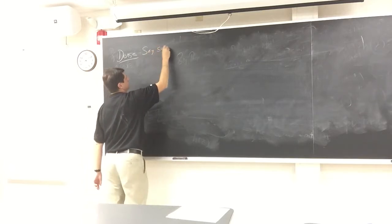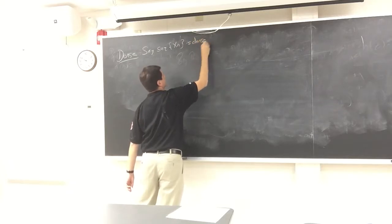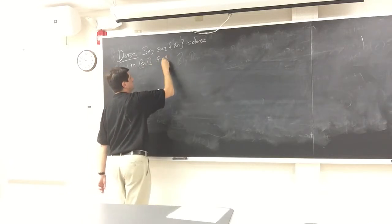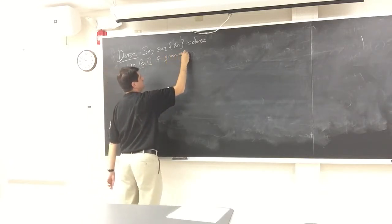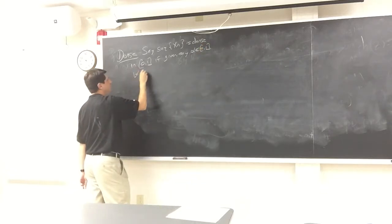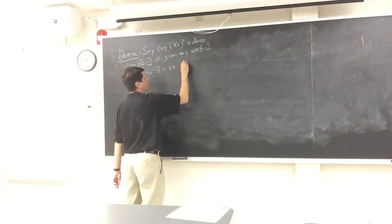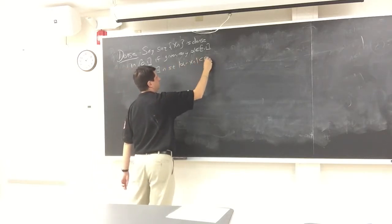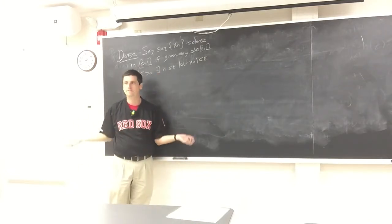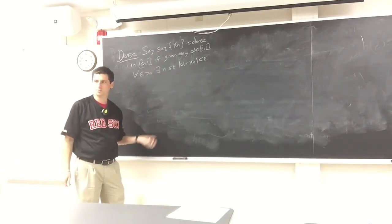We say a sequence x_n is dense in [0,1] if, given any α in [0,1] and any ε > 0, there exists n such that |α - x_n| < ε. This just means you get arbitrarily close — and in fact infinitely often — to any point you want, since we can choose ε to be a sequence of numbers going to zero.